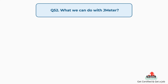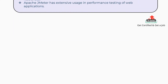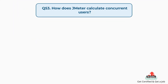Question 52: What can we do with JMeter? We can do performance testing with Apache JMeter. It can load test the functional behavior of a software application, log test results for measuring performance, and test performance on both static and dynamic resources. It has extensive usage in performance testing of web applications.